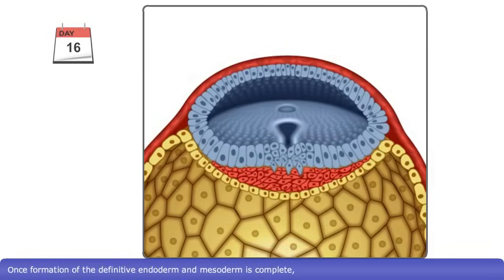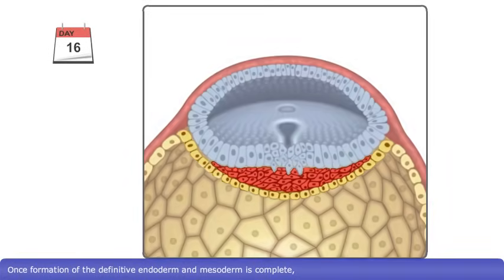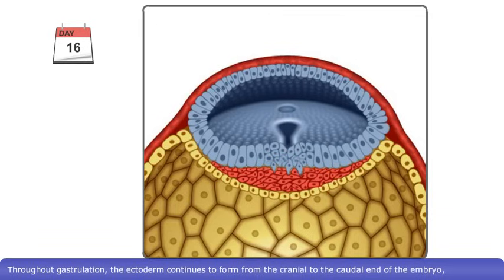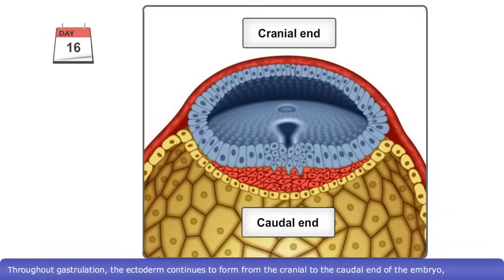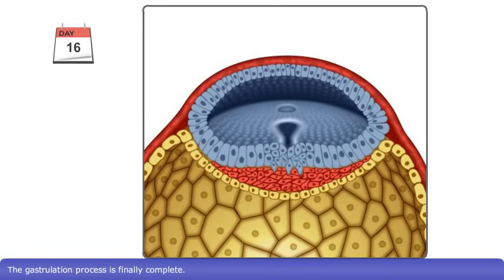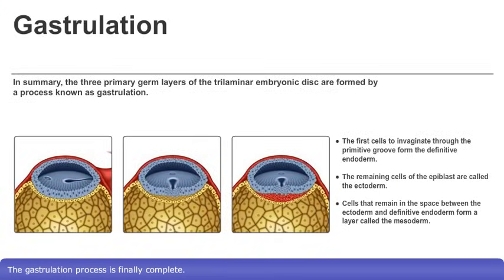Once the formation of the definitive endoderm and mesoderm are complete, epiblast cells no longer migrate towards the primitive streak. Throughout gastrulation, the ectoderm continues to form from the cranial to the caudal end of the embryo, establishing three distinct primary germ layers throughout the whole embryonic disc. The gastrulation process is finally complete.